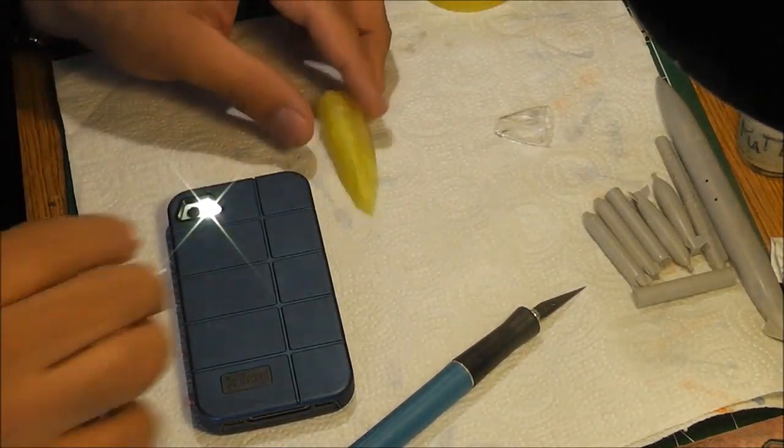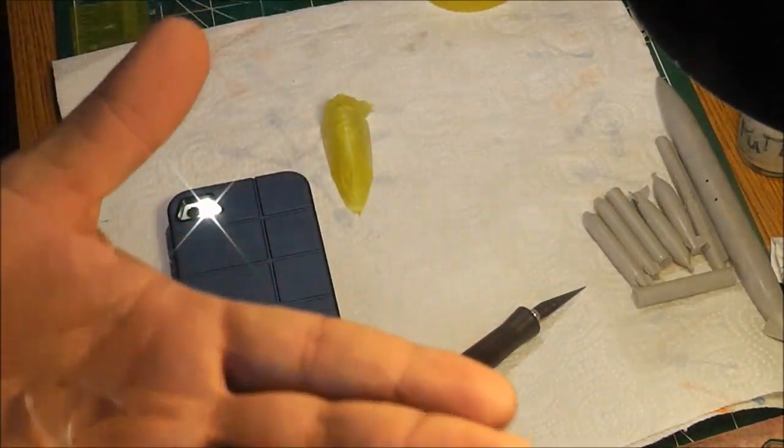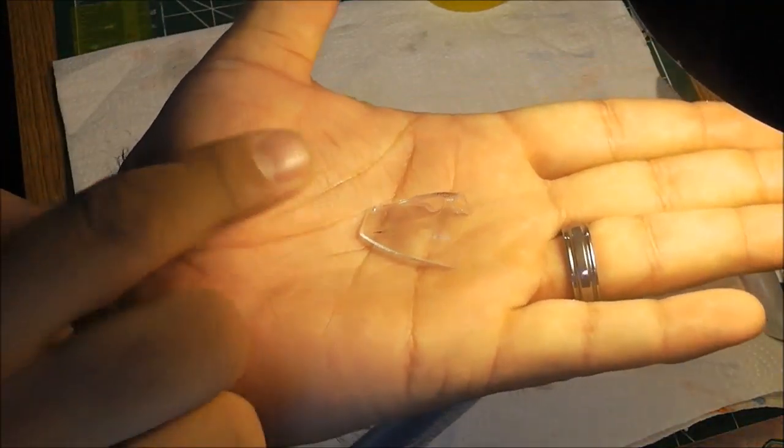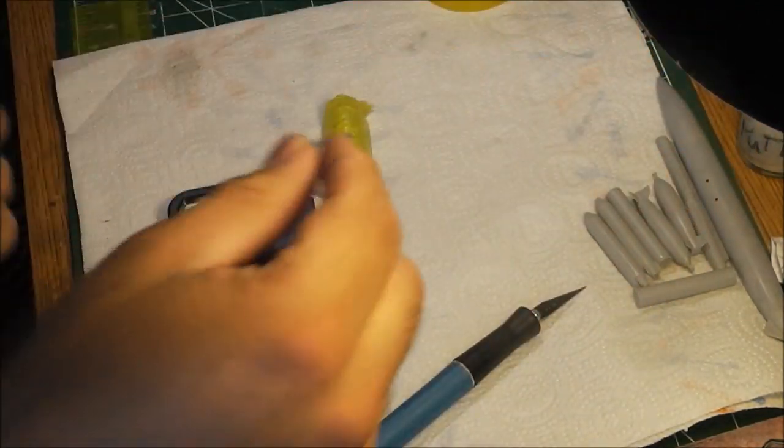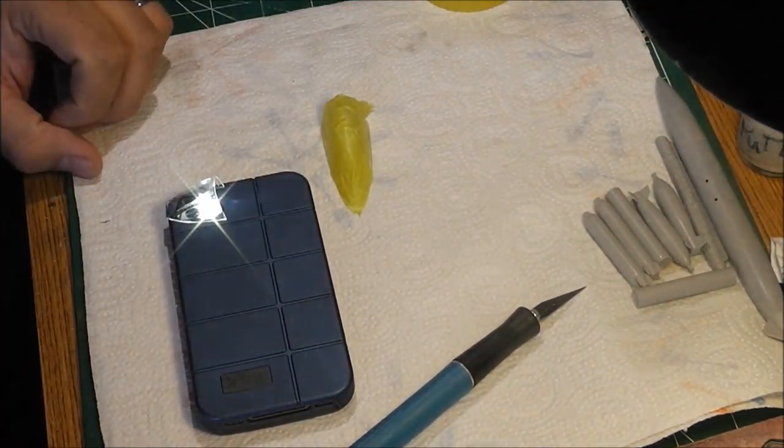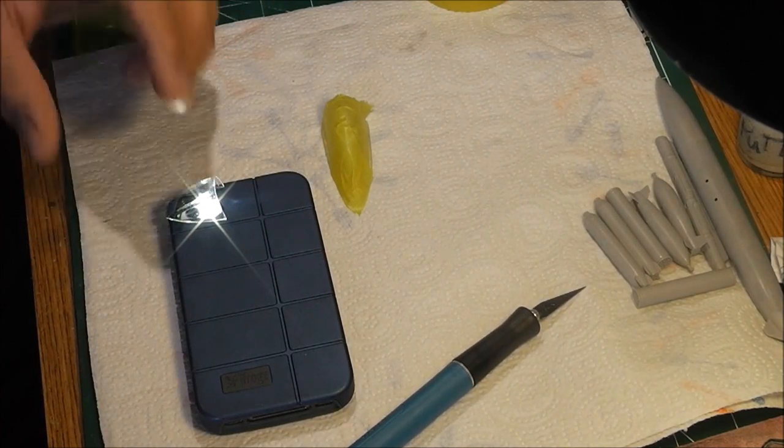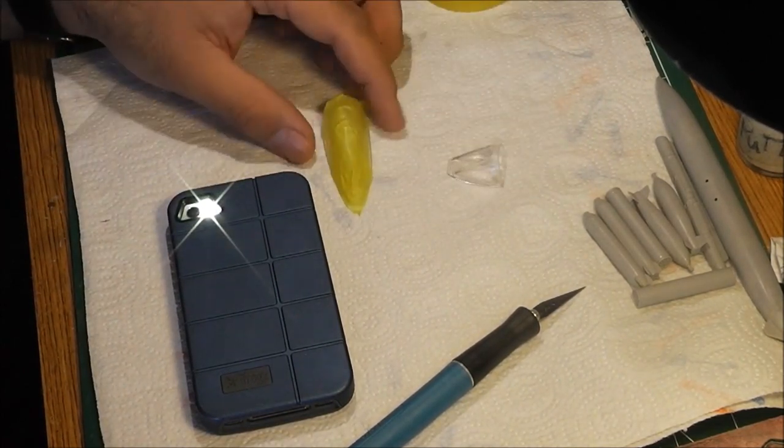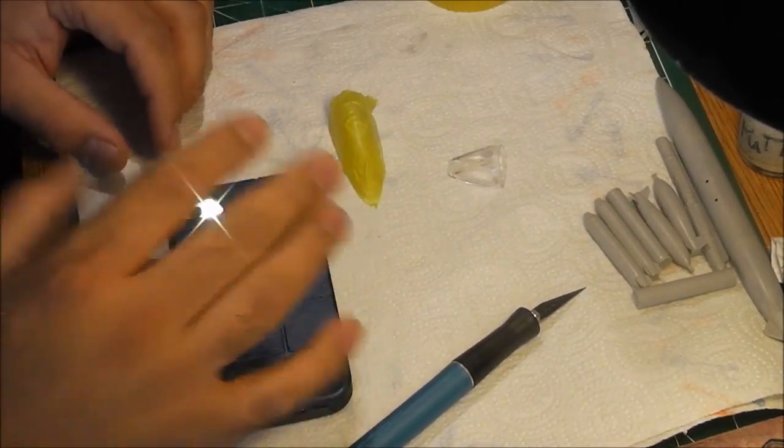For this kind of canopy, for the front where there's a lot of curves and stuff, this works really good. You just place it on top there and cut away. I'm gonna do that and show you guys the result. It's a really nice tip to cut canopies.